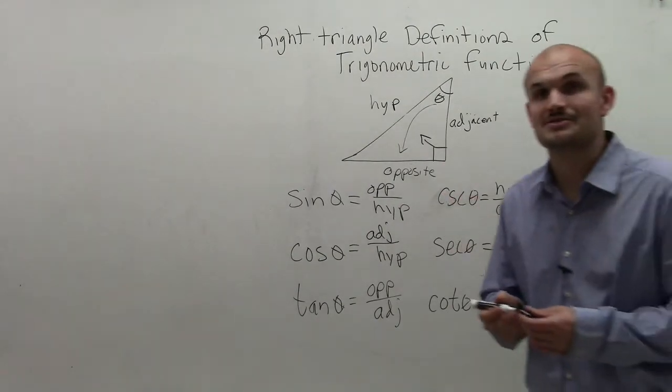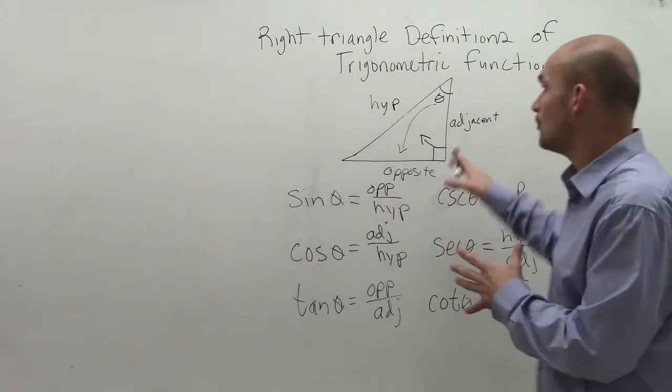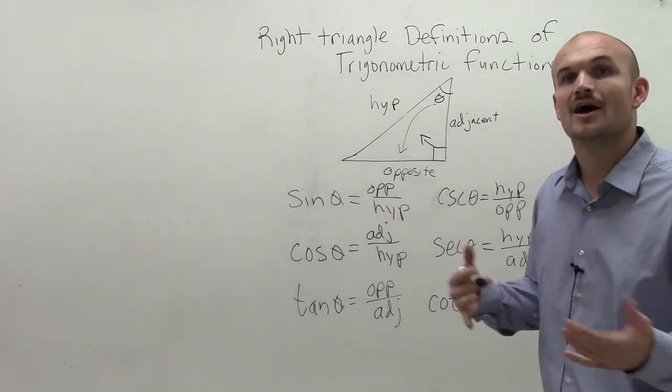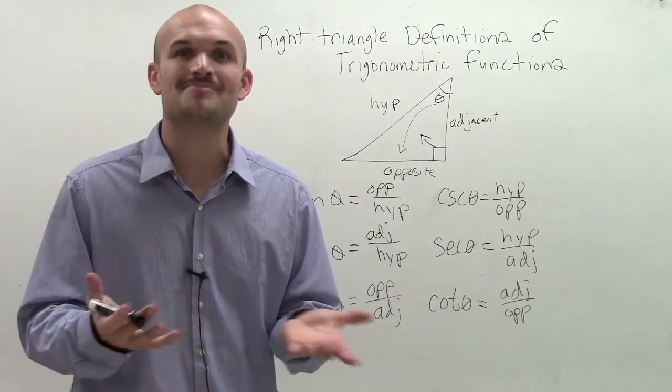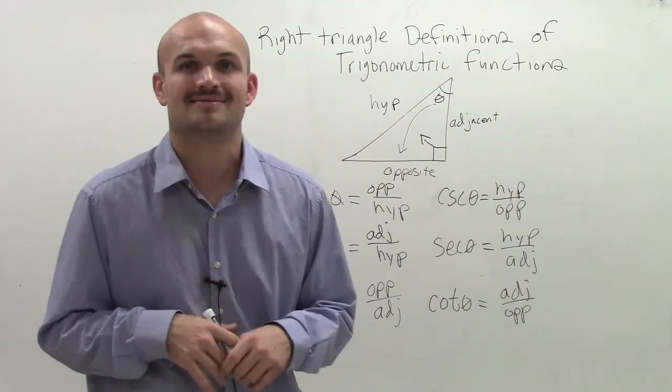So there you go, ladies and gentlemen. Those are going to be your six trigonometric functions when dealing with a right triangle. I hope you understand them and don't have any questions, but if you do, feel free to comment down below. I'd be more than happy to help you out. Thanks.